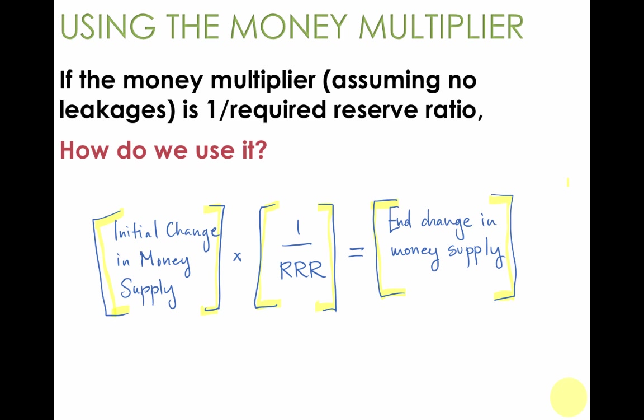There's a single equation we can use for all money multiplier problems: take your initial change in money supply, multiply it by the money multiplier — 1 over the required reserve ratio — and you end up with the end change in money supply.